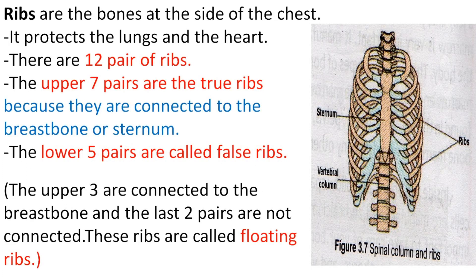Ribs are the bones at the side of the chest. They protect the lungs and the heart. There are 12 pairs of ribs. The upper seven pairs are the true ribs because they are connected to the breastbone or sternum. The lower five pairs are called false ribs. The upper three of these are connected to the breastbone, and the last two pairs are not connected — these are called floating ribs.